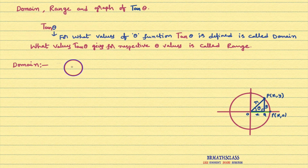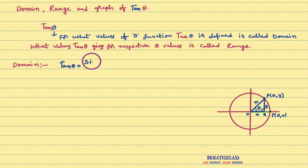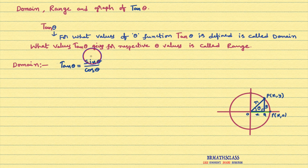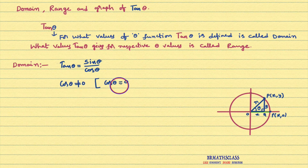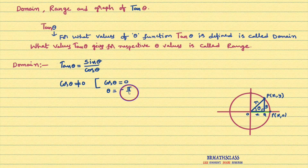Now we will try to learn what is the domain of this function tan theta. We know that tan theta can be written as sin theta divided by cos theta. You see here in the denominator cos theta is there. Whenever cos theta is 0, then this total function is not defined — that means whenever cos theta is 0, tan theta is not defined. So cos theta cannot be equal to 0. When cos theta is 0, whenever theta is odd multiple of pi by 2. For example, cos pi by 2 value is 0.